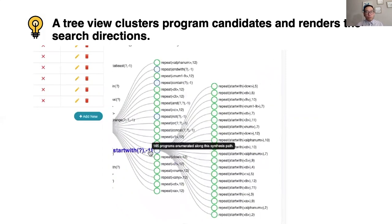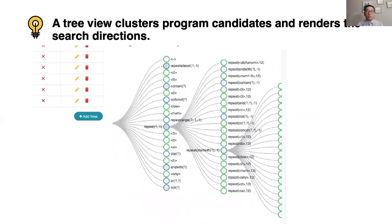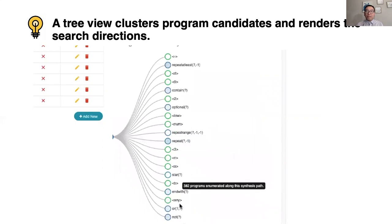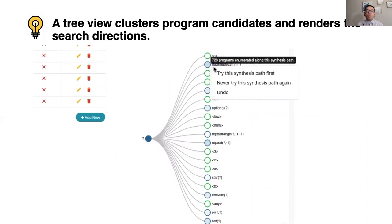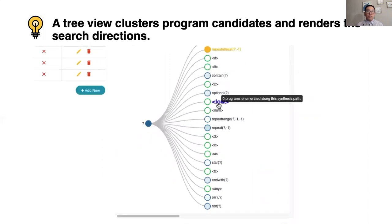Each branch of the tree can be viewed as a search direction. You can prioritize a search direction that looks promising to you, or eliminate a search direction that looks unproductive. In this way, you can manually prune the search space for the synthesizer and improve the search efficiency.